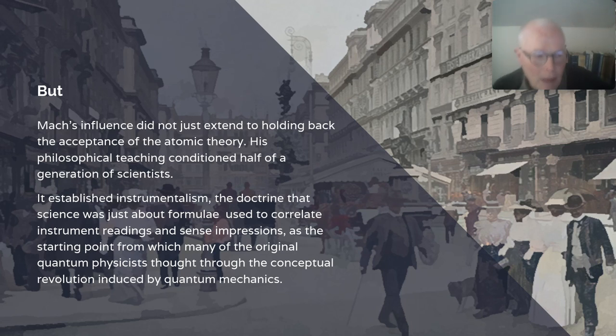The problem is that Marx's influence didn't just extend to holding back the acceptance of atomic theory. His philosophical teaching conditioned half a generation of scientists. In particular, it had a huge influence on the way quantum physics was interpreted. So he established instrumentalism, the doctrine that science was just about formulae used to correlate instrument readings and sense impressions, as the starting point from which many of the original developers of quantum physics thought through the conceptual revolution introduced by quantum mechanics and influenced what became the standard interpretation, the Copenhagen interpretation of quantum mechanics.